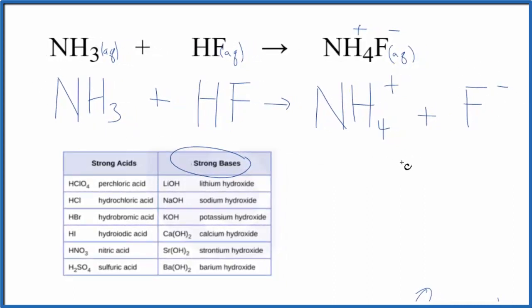Now we can cross out spectator ions. The thing is, there's nothing different on either side. So this is the complete ionic equation and the net ionic equation.